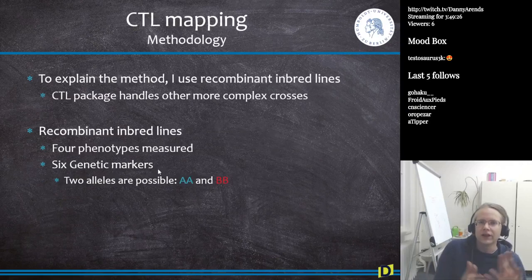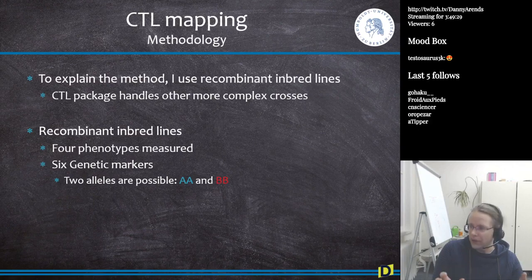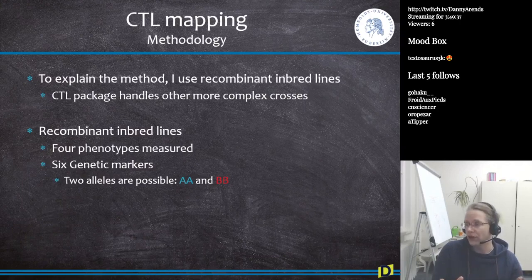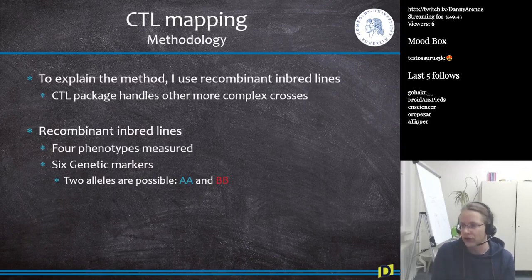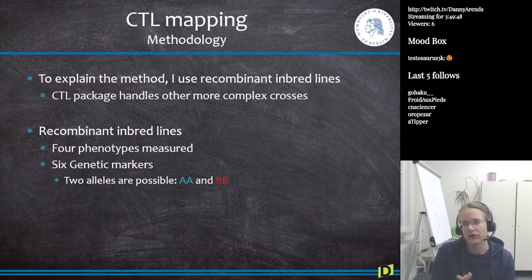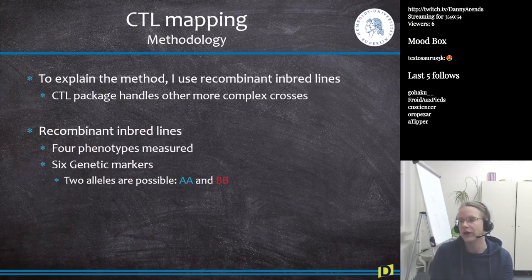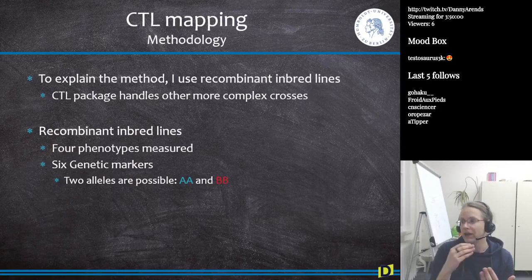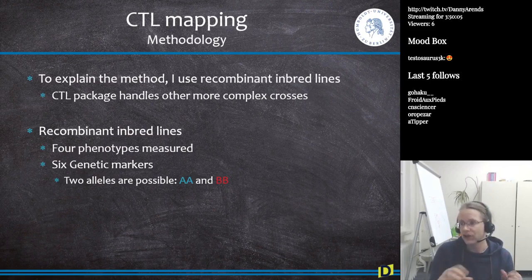The methodology — here I explain it using recombinant inbred lines. There is a package on CRAN called CTL, and this package handles many more complex crosses. I just explain it here using AA and BB individuals, but it also works if you have an F2 population where you have AA, AB, and BB individuals. So recombinant inbred lines — the example here assumes I have four phenotypes which have been measured and I have six genetic markers. So I have four different phenotypes and six genetic markers.